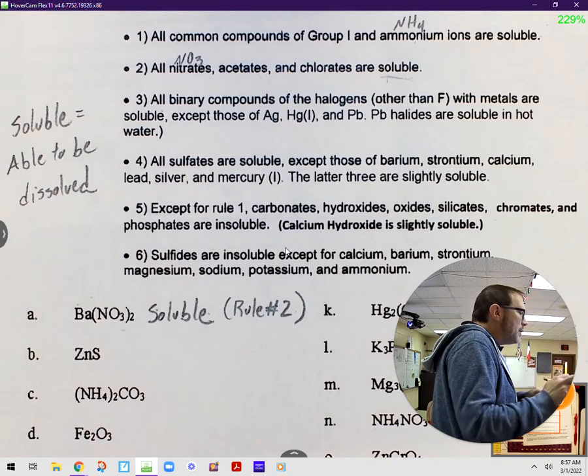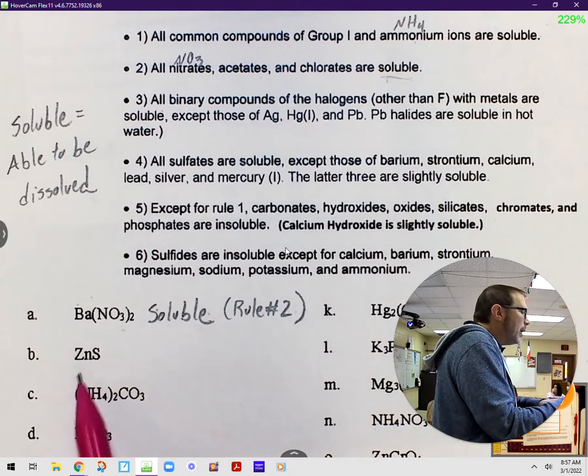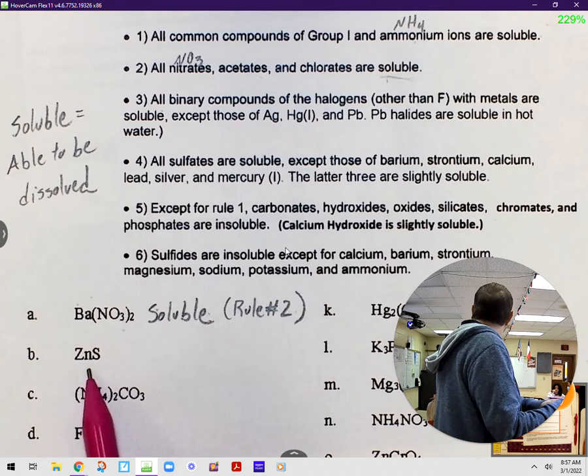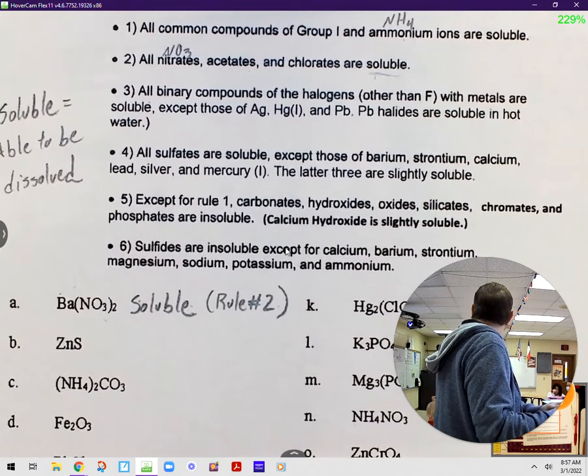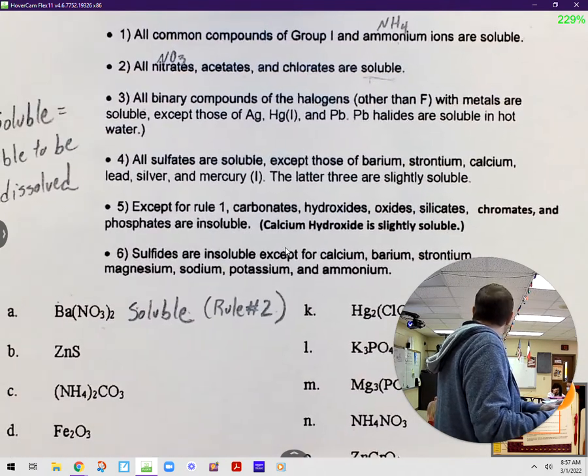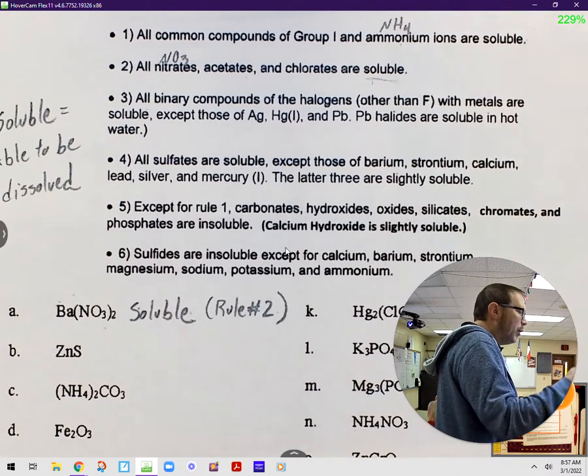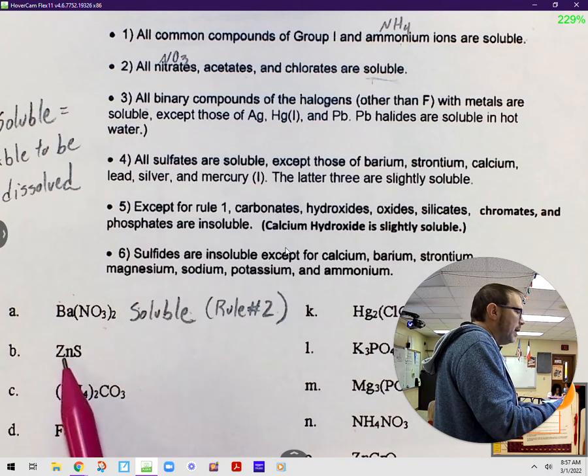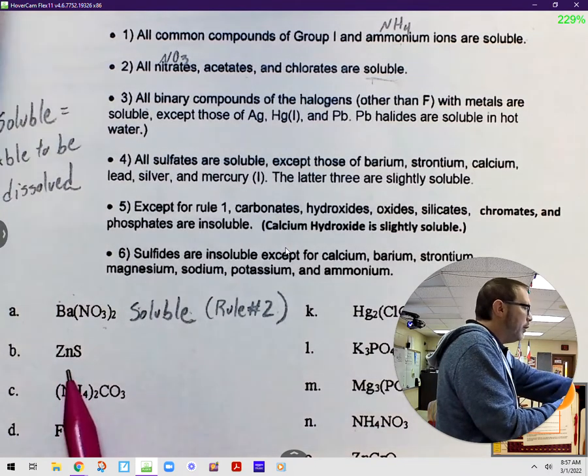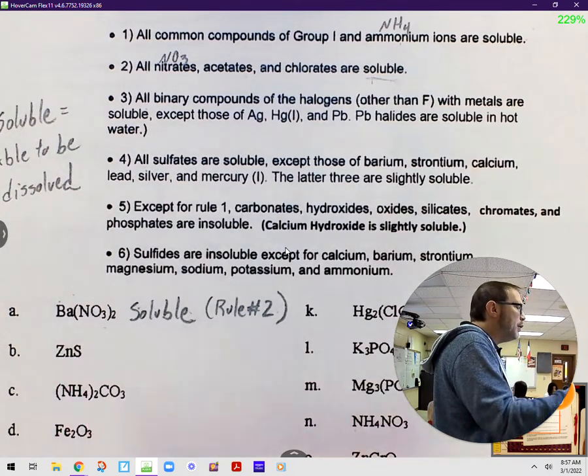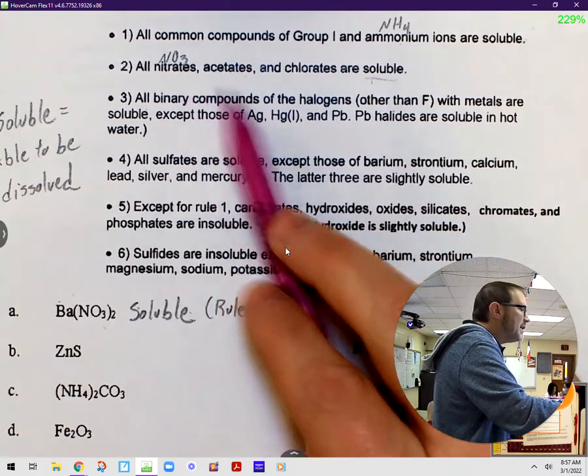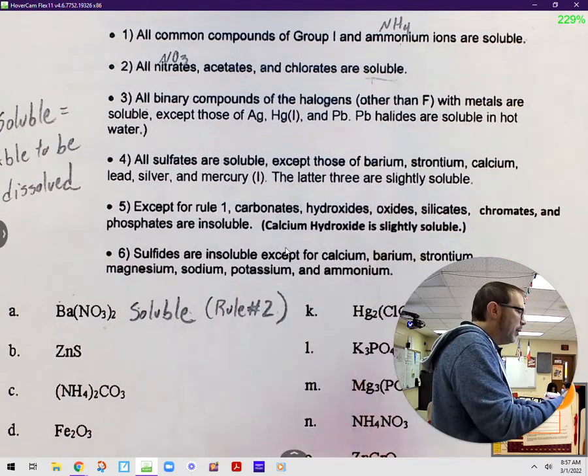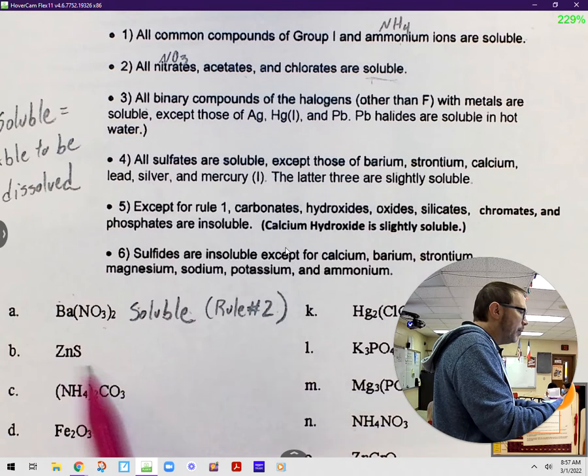Let's go down to B here. We have ZnS. Let's start at the top. Rule number one. Rule number one, all common compounds of group one and ammonium ions are soluble. ZN is zinc, right? Is zinc in group one? Nope. So we move on to two. All nitrates, acetates, and chlorates are soluble. Does that apply to what we have right here? No. Nope. Because that's just sulfur, right?